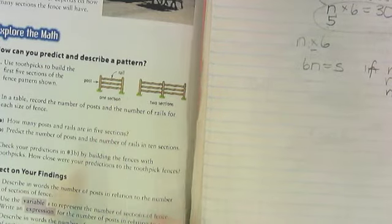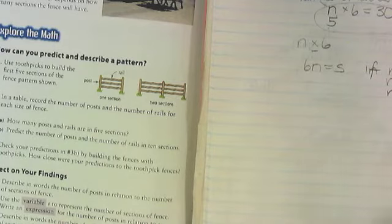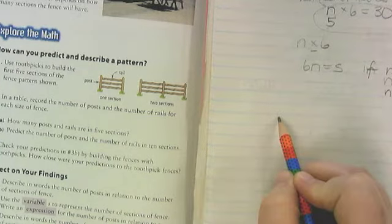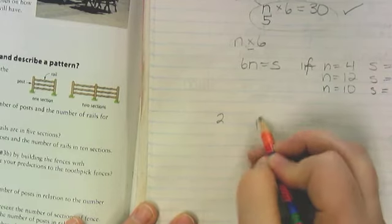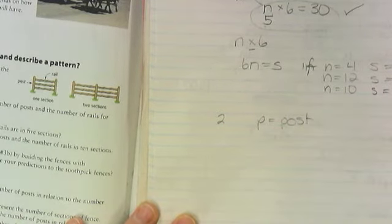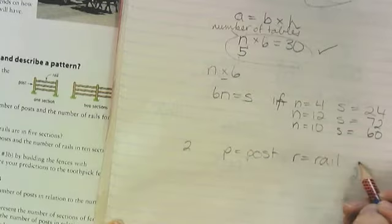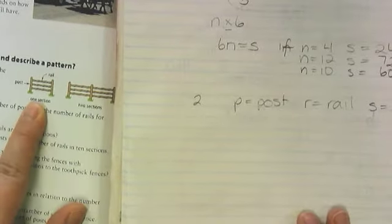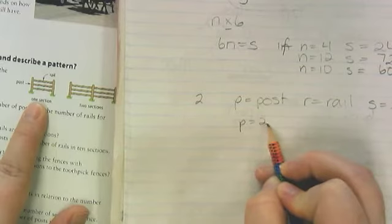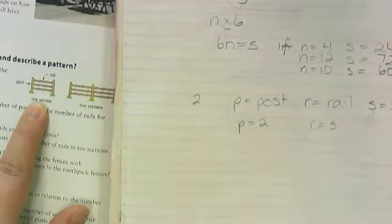So if we take a look at this, if we have two posts, what can we use, what variable can we use to represent post? P. So P equals post and R equals rail and S equals section. Looking at this, if P equals two, R equals three, and S equals one.